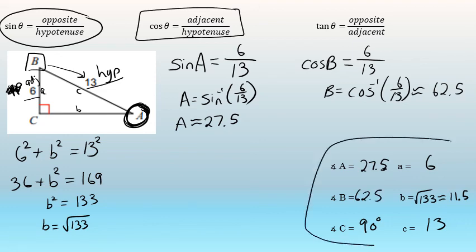So at this point, I have solved the triangle, at least to the nearest tenth. Angle A is 27.5, angle B is 62.5, and angle C given was 90. Side A and side C were given as 6 and 13. Side B is exactly the square root of 133, which is approximately 11.5. Notice that in a solved right triangle — or any triangle — across from the largest angle is the largest side, across from the smallest angle is the smallest side, and the angle measure in the middle is across from the side length that's in the middle.